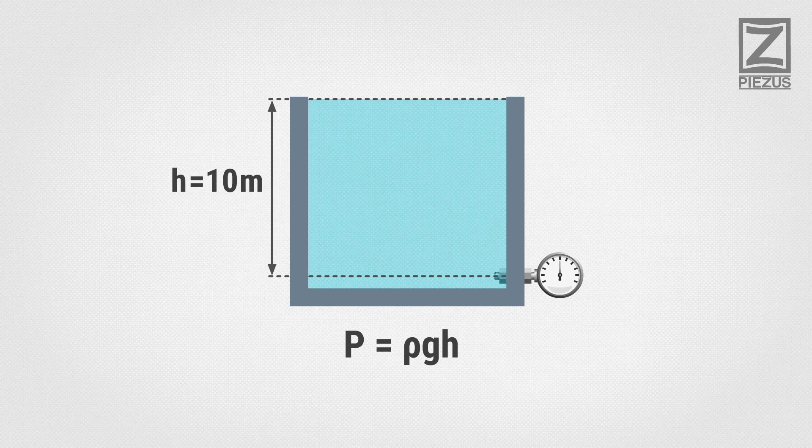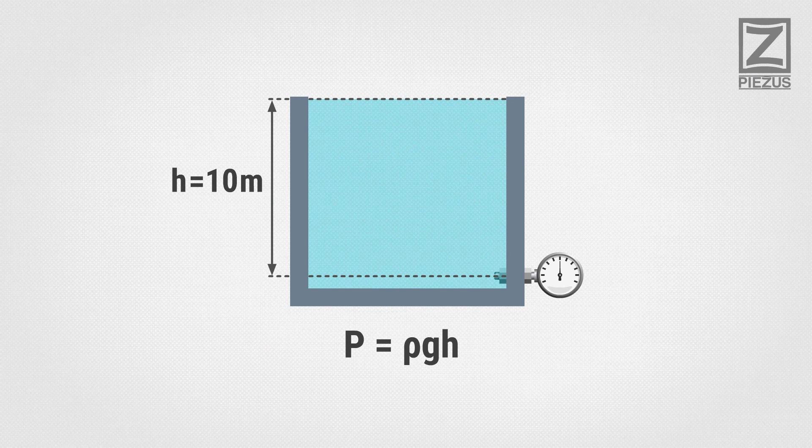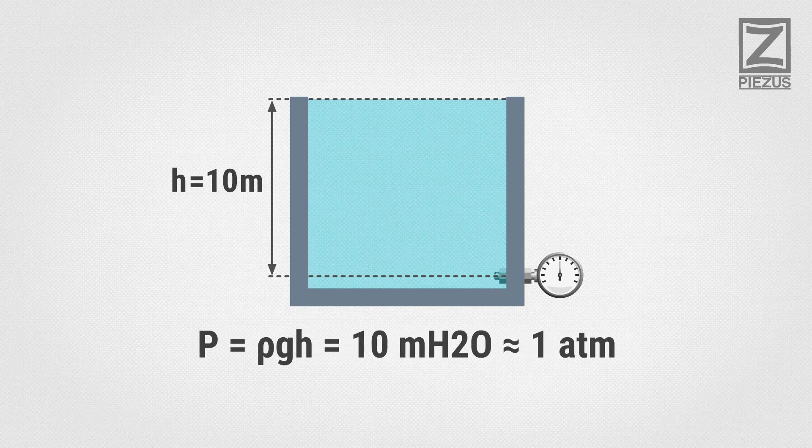For example, pressure at the depth of 10 meters underwater equals to 10 meters of water column, or approximately one atmosphere.